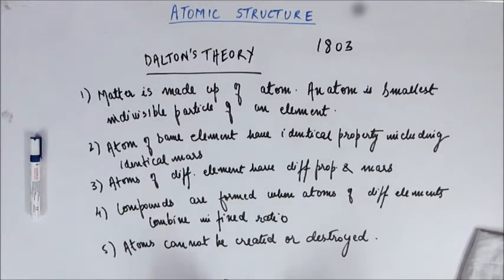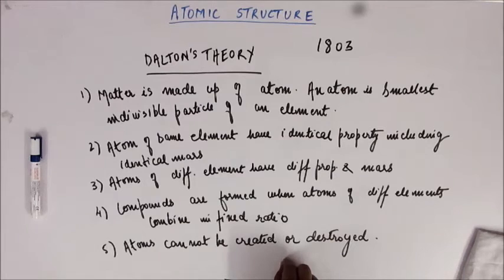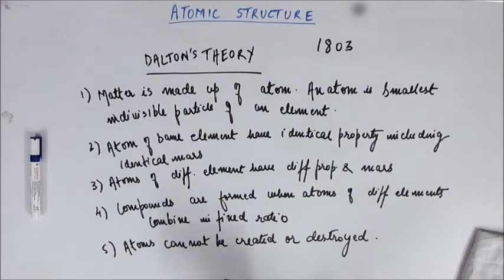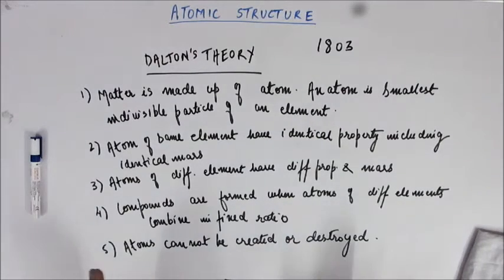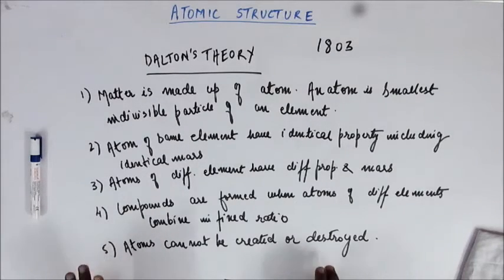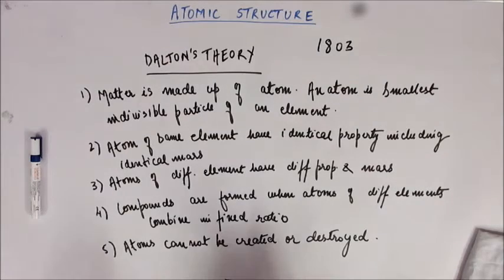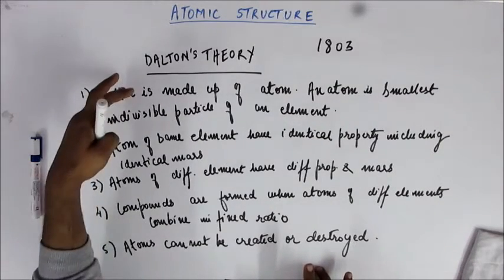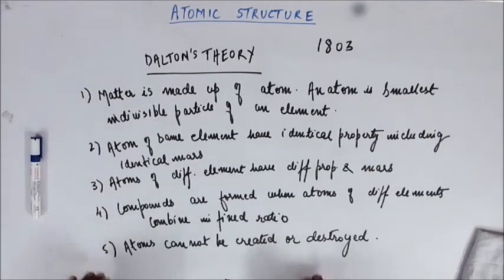Let me give a little background on John Dalton. He was a brilliant meteorologist with a keen interest in studying climatic variations. He maintained a record of local weather variations every day for 57 years. He had huge experience working with gases and observed that these five points held good in terms of gaseous chemical reactions. Unfortunately for him, all five points he gave actually turned out to be wrong.